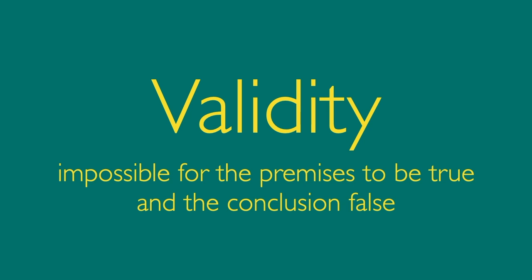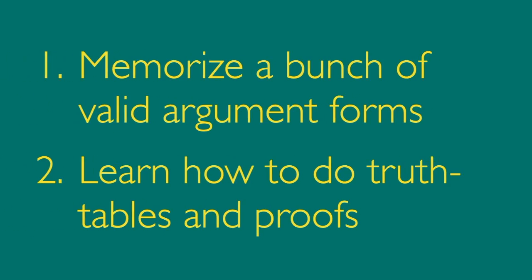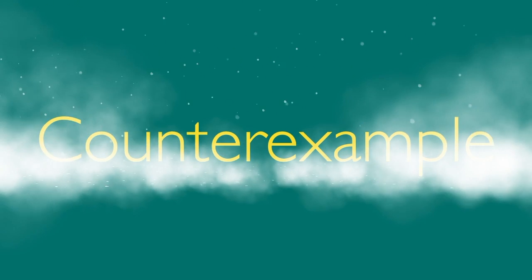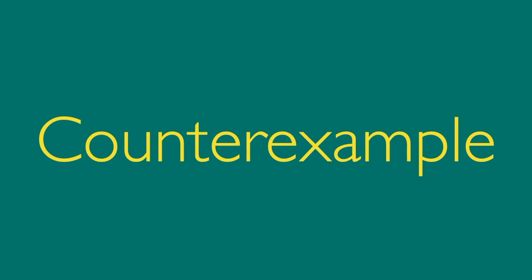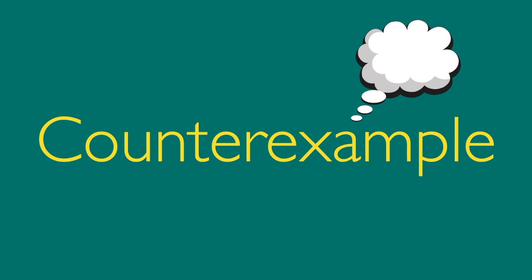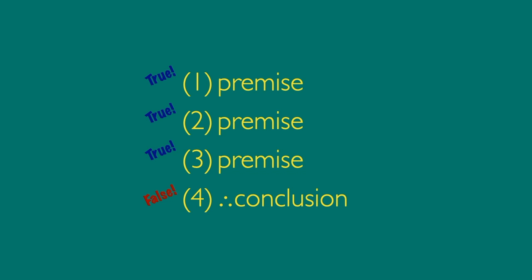But how can you tell whether an argument is valid? Here are two unhelpful answers: memorize a bunch of valid argument forms, or learn how to do truth tables and proofs. If you take a logic class you'll do both of these things, but what can you do right now? The answer is the counter-example. A counter-example is just a little story — a scenario that you dream up to see if you can imagine a situation where the premises are true but the conclusion is false.